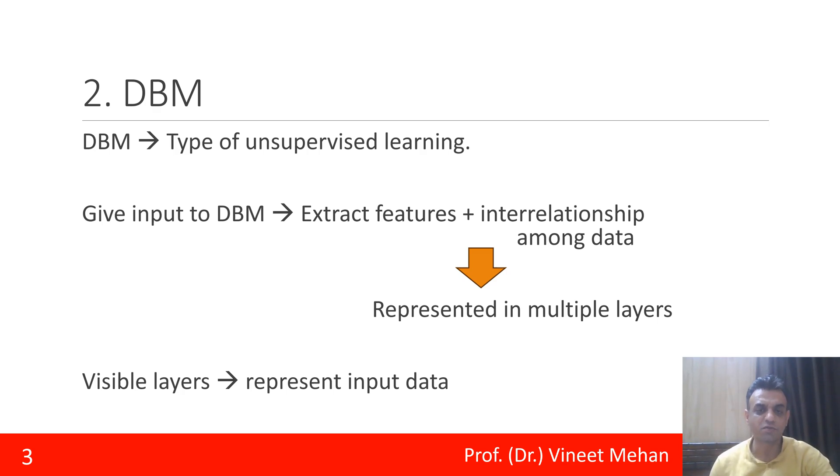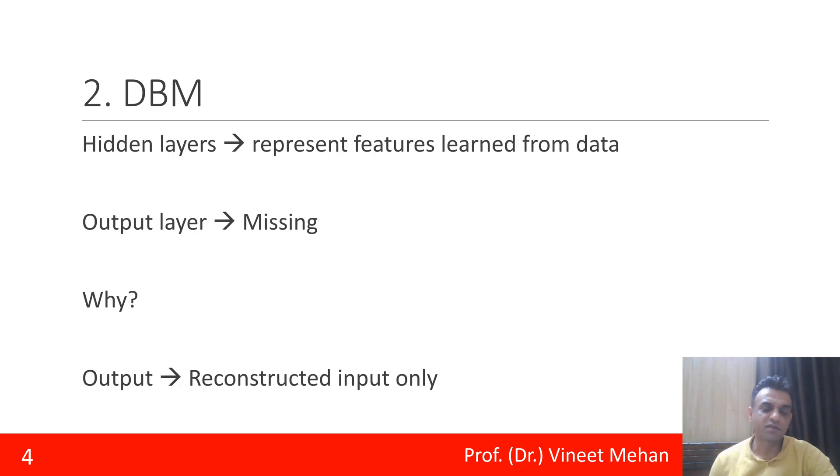What are the layers that are part of DBM? The first layer is the visible layer. This visible layer represents input data. The second layer is the hidden layer. This represents features that are learned from data.